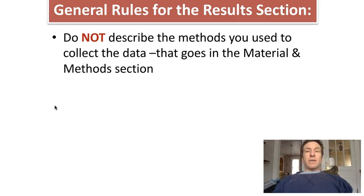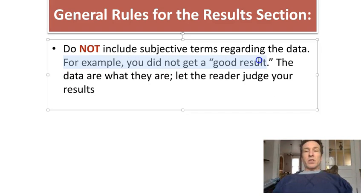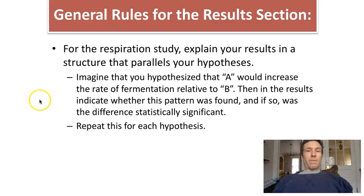In the results, do not describe the methods — that information would have gone in the materials and methods section. Do not tell us anything subjective about your data. For example, don't tell us whether your result was good. Don't tell us whether your result was unexpected or not real. Simply state what you found. You could, in the discussion section, tell us something about your interpretation of the quality of the results, if you were writing that section.